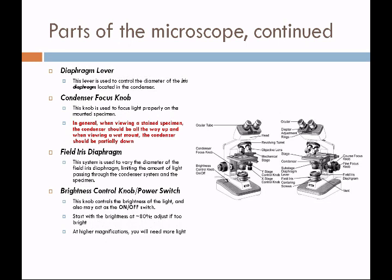On the base of the microscope, there is a brightness control knob and a power switch. This knob controls the brightness of the light and may also act as the on-off switch. It is important not to start with the brightness all the way up — start at about 80%. Every time you increase your magnification, remember to increase your light. The illuminator houses a halogen bulb in the base of the microscope and illuminates your specimen. The halogen bulb is ideal because it gives a wavelength of light in the blue range, which is ideal for resolution.